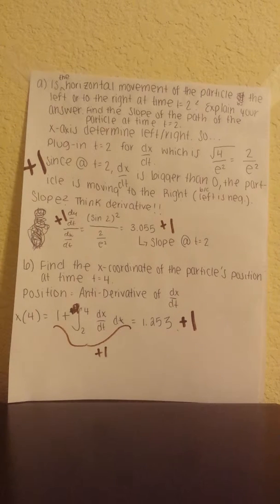First we have part A. Is the horizontal movement of the particle to the left or to the right at time t equals 2? Explain your answer. Find the slope of the path of the particle at time t equals 2. The x-axis would determine left and right.